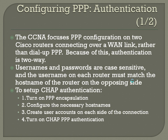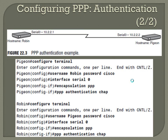To set up CHAP authentication: turn on PPP encapsulation, configure the necessary hostnames, create user accounts on each side of the connection, and then turn on CHAP PPP authentication. In this example, we have a router named Pigeon and a router named Robin connected via a serial link (10.2.2.1 and 10.2.2.2). On Pigeon: config T, username Robin password Cisco, interface serial 0, encapsulation PPP, PPP authentication CHAP. On Robin: username Pigeon password Cisco, interface serial 0, encapsulation PPP, PPP authentication CHAP — and you're done.